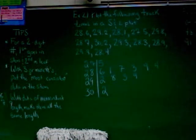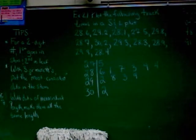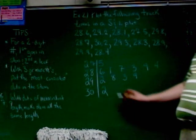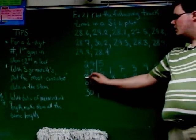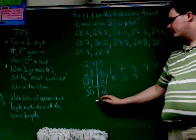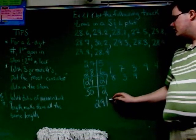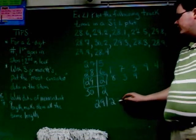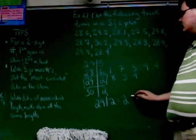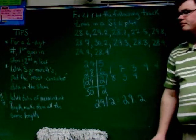And again, you do want to include a key here. You can use whatever piece of information you want — I'm going to grab that piece right there and say that 29 | 2 equals 29.2.